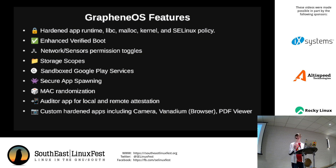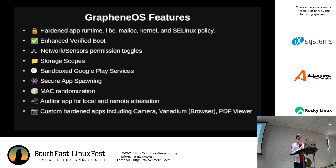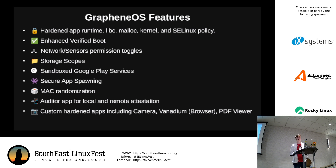GrapheneOS has a ton of features — this is honestly just a short list. It has hardened features, enhanced verified boot, network and sensors runtime permission toggles, storage scopes, sandbox Google Play Services, secure app spawning, MAC randomization, an auditor app for local and remote attestation, and custom hardened apps including a hardened camera, a hardened version of Chromium called Vanadium, and a hardened PDF viewer.